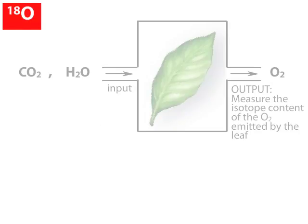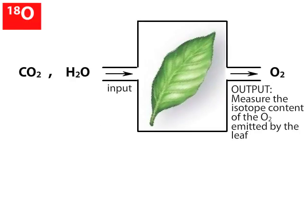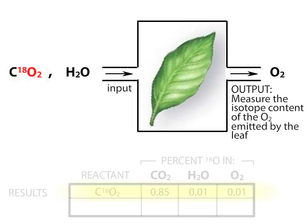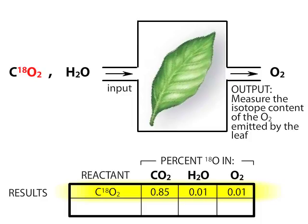Let's begin by labeling the carbon dioxide reactant with the oxygen-18 isotope. Our data will consist of the O18-O16 isotope ratio measured in the evolved oxygen as compared to the starting ratio in the CO₂ reactant and unlabeled H₂O. Note that not all of the CO₂ will contain the heavy isotope.